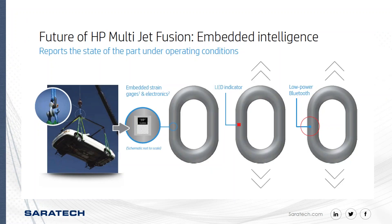In the future, HP suggests we could soon 3D print prototype parts by printing sensors that might measure stress or durability and instantly send that information via Bluetooth, built in during the printing process. HP has also made claims to soon be jetting material during the printing process that might be conductive. Now I'd like to show you a short video on what's to come from HP multi-agent delivery systems.